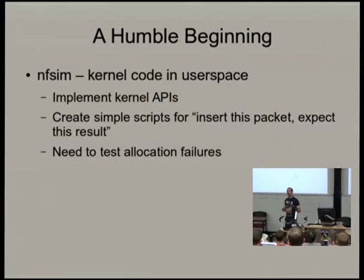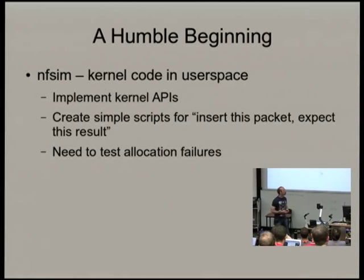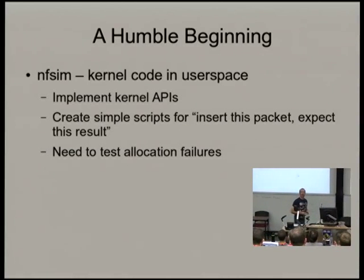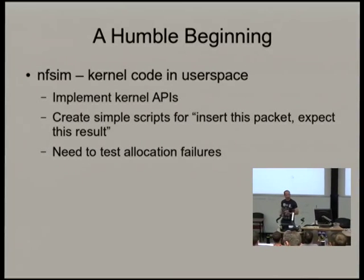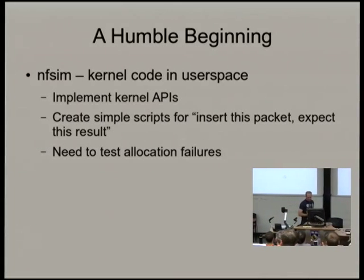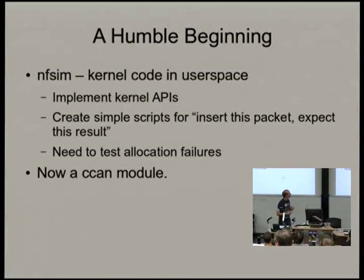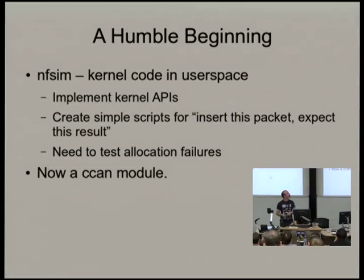That works reasonably well, but you basically don't find any real bugs doing that — you find bugs in your kernel API implementation. What we really want to do is test allocation failures. In the kernel you're not allowed to explode when you run out of memory, so you have to handle and unwind all the state on allocation failure. That trick became fail_test, which is now a CCAN module.